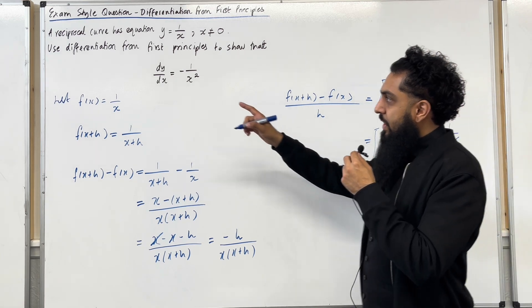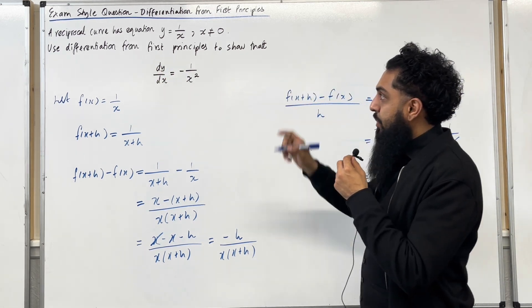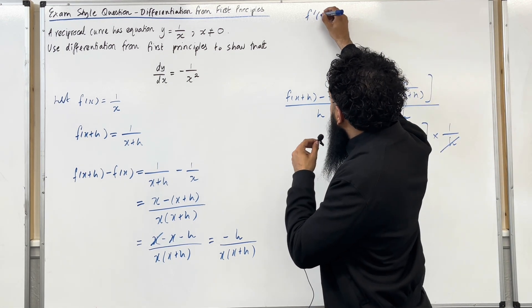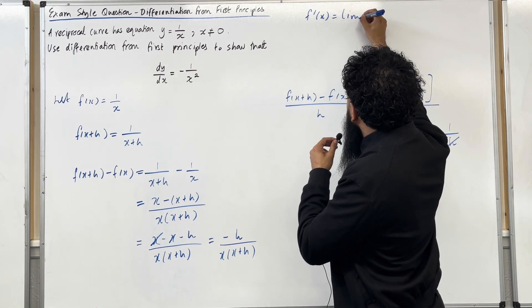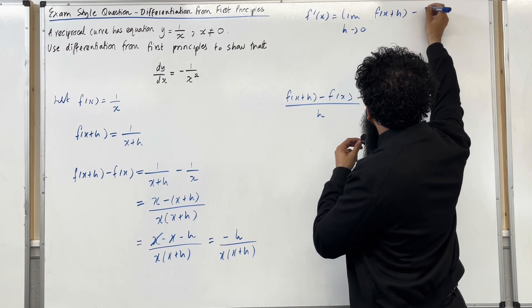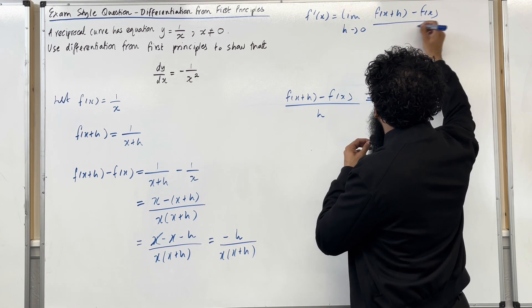So in the question it says, use differentiation from first principles. So to work out f dash of x, we have to take the limit as h tends to 0 of f of x plus h minus f of x all over h.